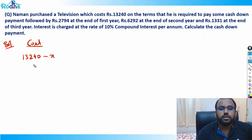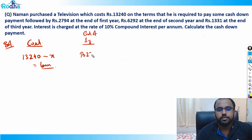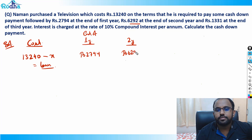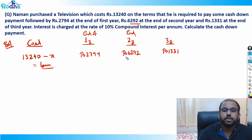The rest will be the loan or balance amount. At the end of the first year he is paying ₹2794. At the end of the second year he is paying ₹6292. And at the end of the third year he is paying ₹1331.